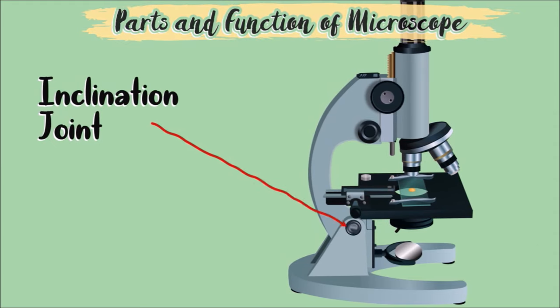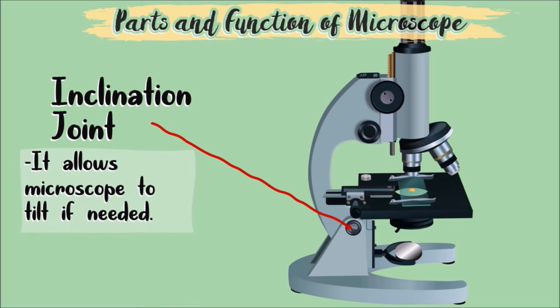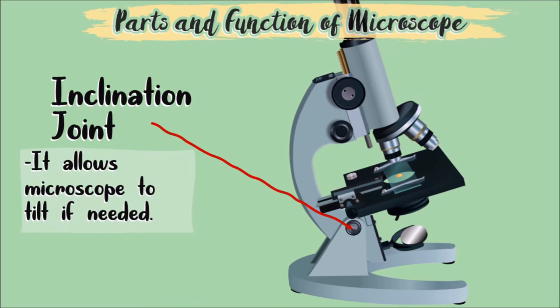This part is called inclination joint. It allows the microscope to tilt if needed.